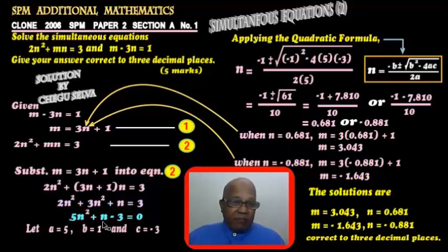Now we are going to apply the quadratic formula. Let a equals 5, b equals 1, and c equals negative 3.